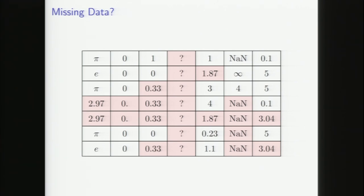Another option is to do something like mean imputation, but there are issues with that. This column has a bunch of e's and pi's and then suddenly 2.97 — that doesn't seem right. This column has zeros that look like integers but those are floating point numbers. And if we have infinities and NaNs, mean imputation gets disgusting. You can try mode imputation, but basically simple strategies often don't work out.